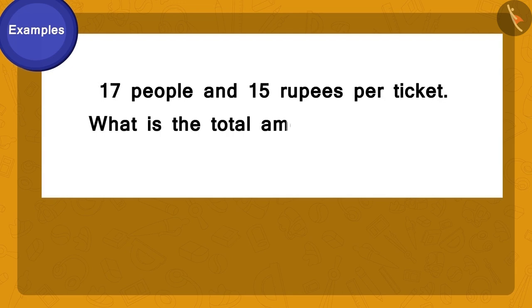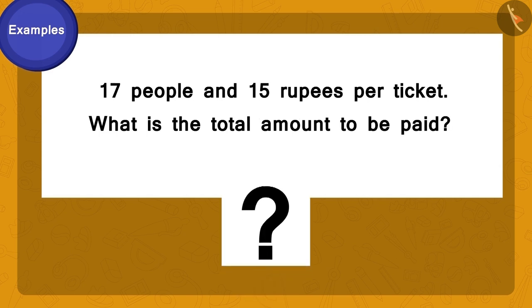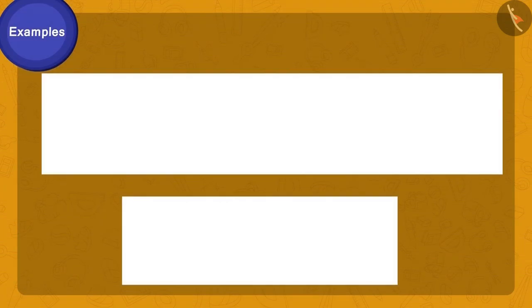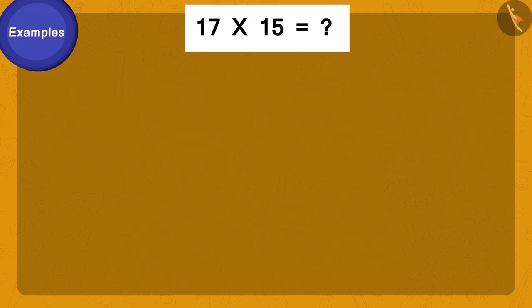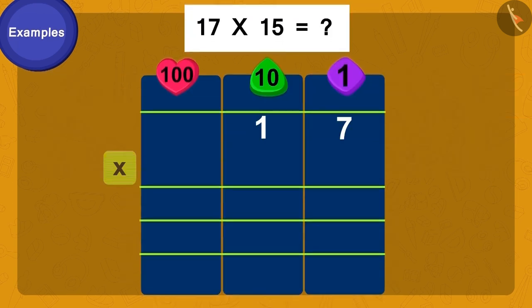Raju and Bablu are unable to calculate how much money they will have to pay to buy the required number of tickets. Come children, let us help Bablu and Raju once again. This time let's learn to perform this multiplication using a different process. First we will write multiplication this way. Now we will multiply 5 of 15 by 7 of 17. Did you get it?